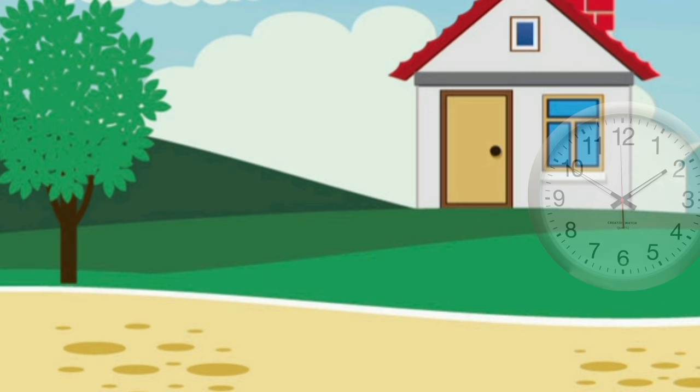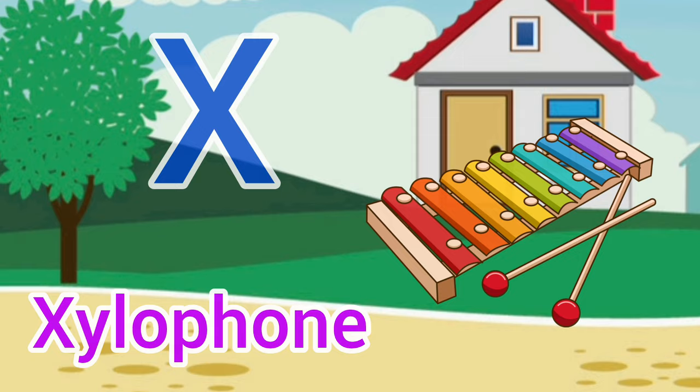X for xylophone. Y for yarn, yarn means dhaga.